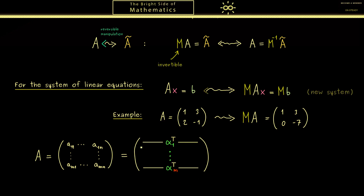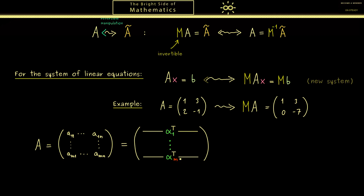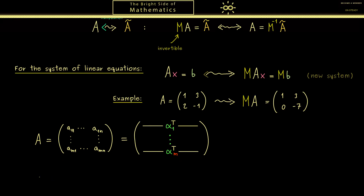What we want is to take one row and add another row to it. The row picture for the matrix product can help us describe this. We choose a vector c transpose that has only two non-vanishing entries, called c_i and c_j. This should be a 1 times m vector, so we can multiply it from the left to matrix A. What we get is similar to the column picture of the matrix-vector product discussed in part 14 — it's just the transpose version.